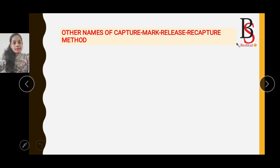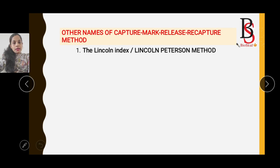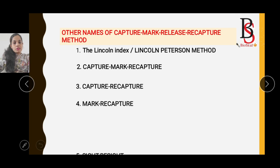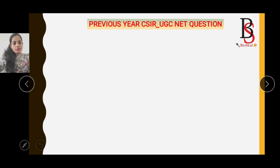The Capture Mark Release Recapture method is also known by other names: the Lincoln Index, the Lincoln-Peterson method, Capture-Mark-Recapture, Mark-Recapture, and also Site-Reside. All of these methods use the same formula — N = MC/R — to estimate the population size.